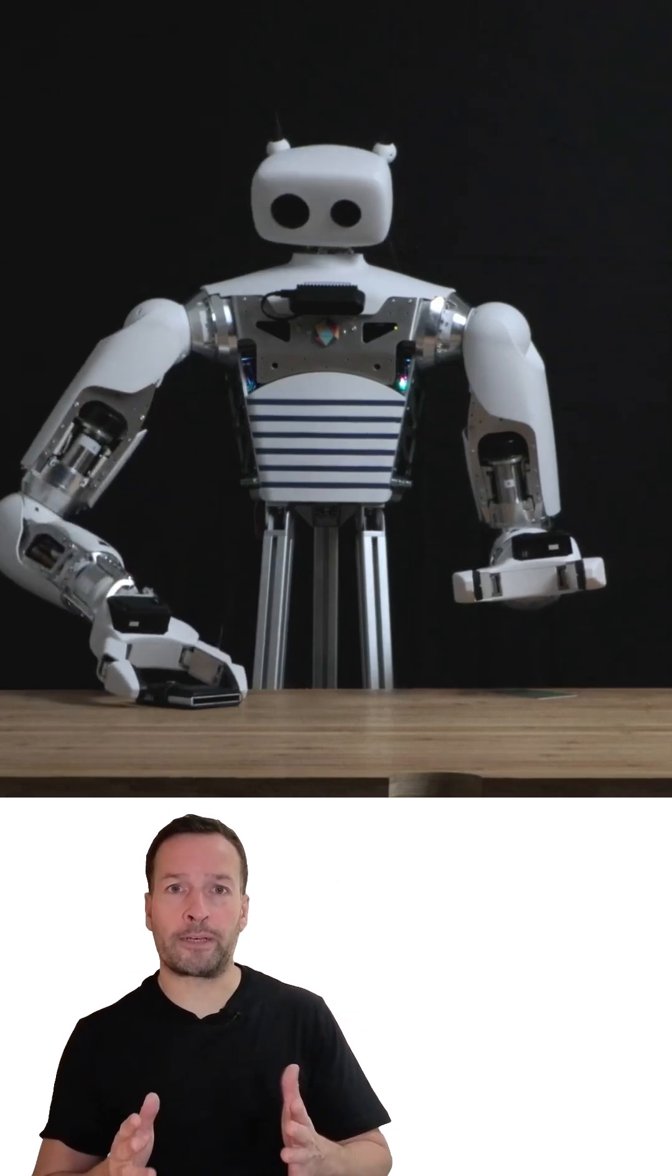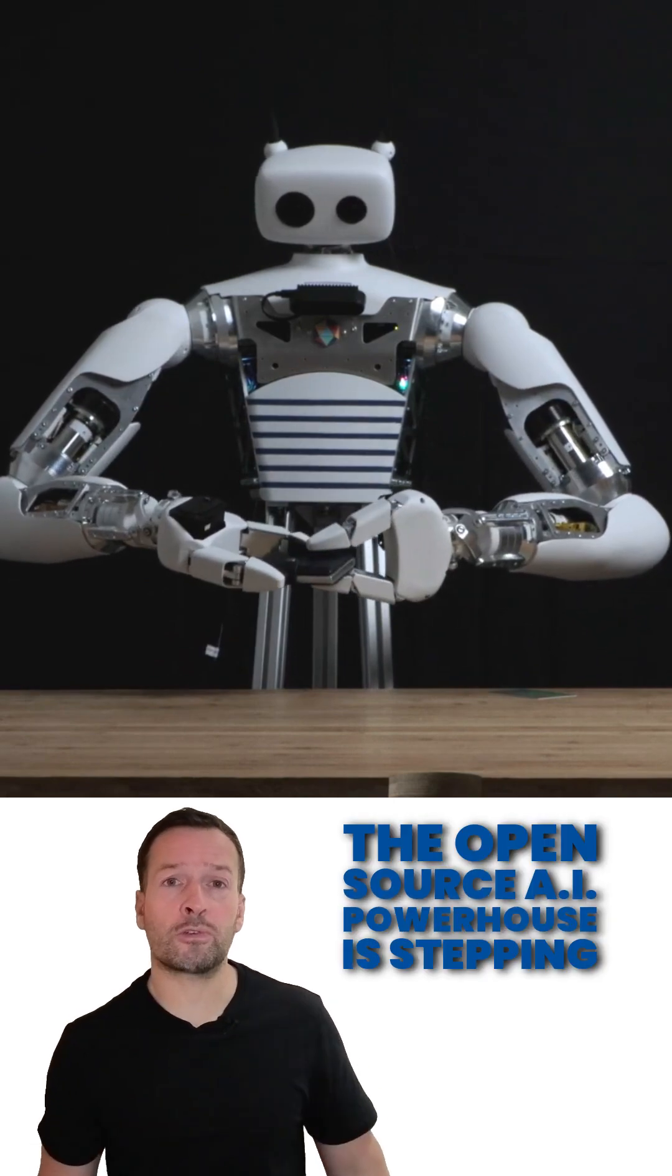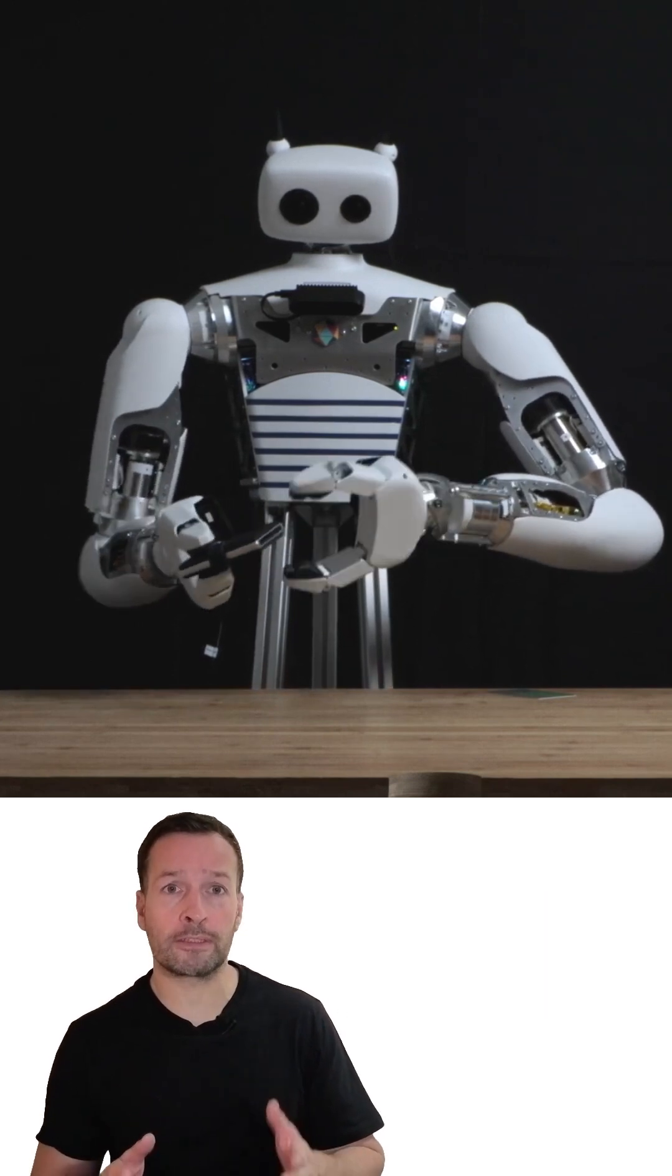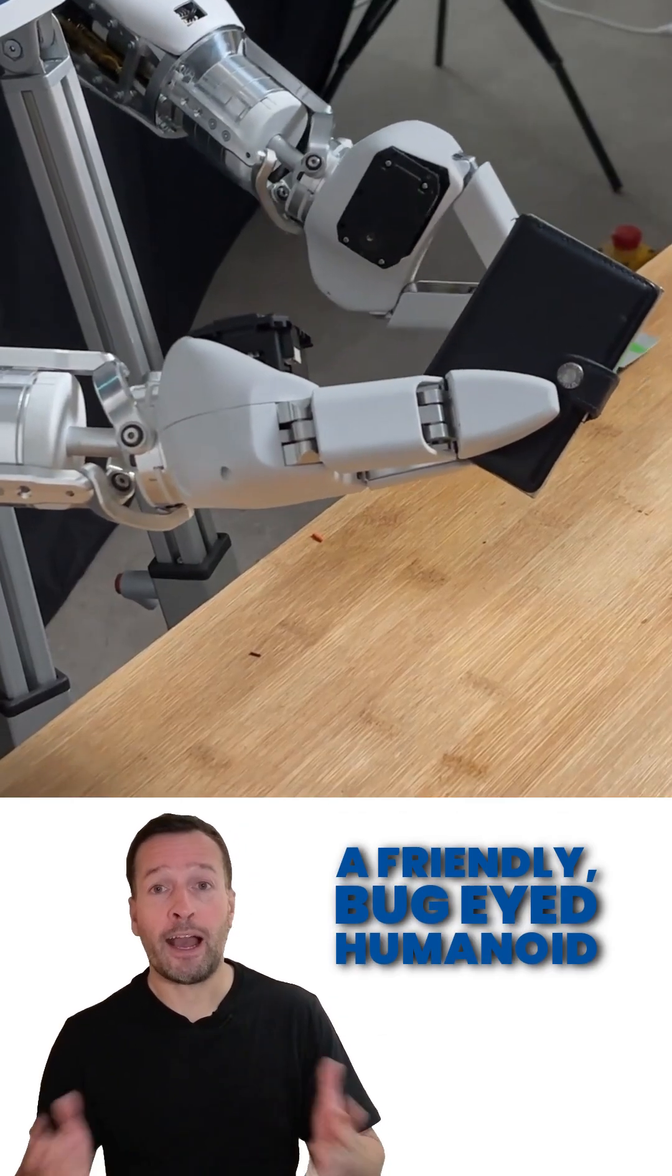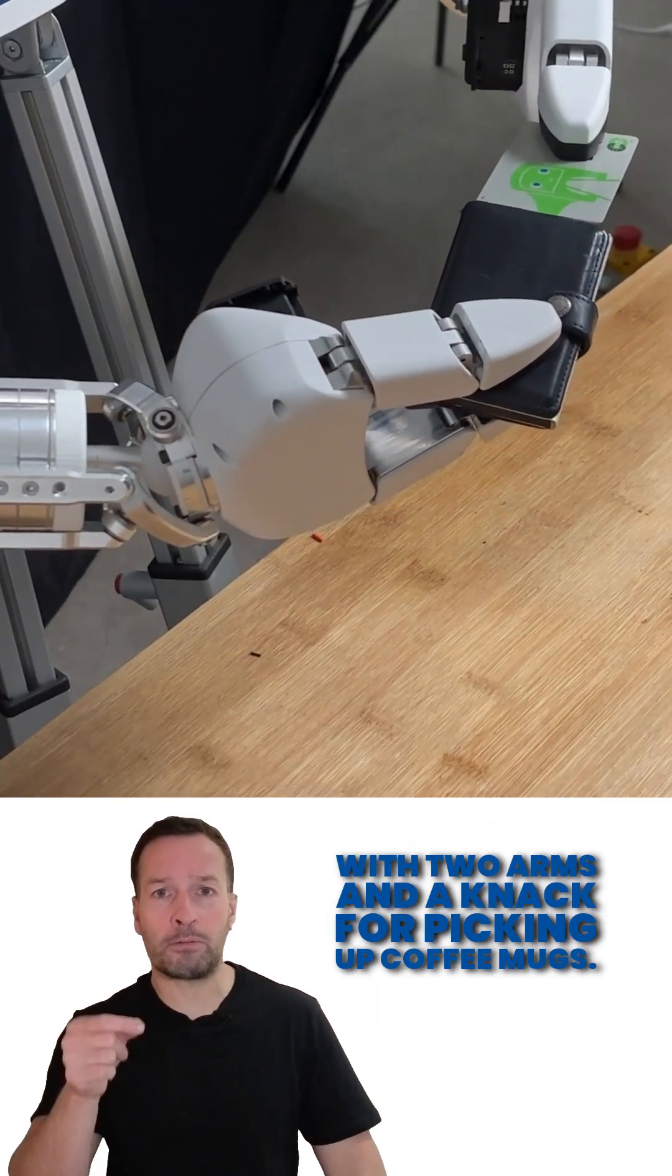Hugging Face acquires Pollen, unleashing Ricci 2. Hugging Face, the open-source AI powerhouse, is stepping into the world of physical robots. They've just acquired Pollen Robotics, the team behind Ricci 2, a friendly bug-eyed humanoid with two arms and a knack for picking up coffee mugs.